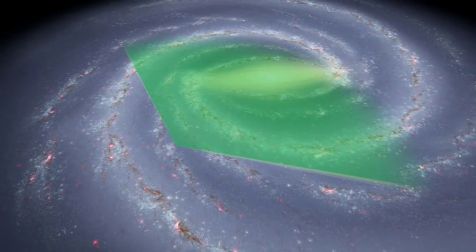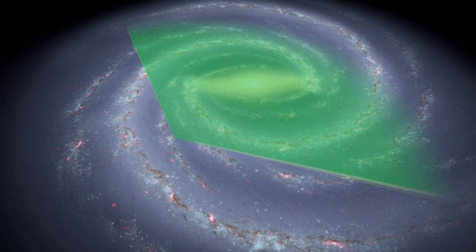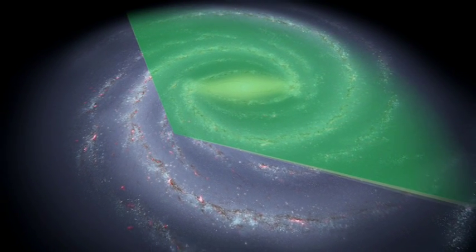Our Sun sits a ways out from the galactic center, so a 130-degree arc takes in most of its area.